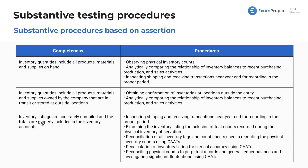Lastly, we are concerned that inventory listings are accurately compiled and totals are properly included in the inventory accounts. We're going to inspect shipping and receiving transactions near year-end for recording in the proper period. We could examine the inventory listing for inclusion of test counts recorded during the physical inventory observation. We could conduct a reconciliation of all inventory tags and count sheets using computer-assisted auditing techniques, recalculate the inventory listing for accuracy, and reconcile the physical counts to perpetual records — for example, if we physically count 15 pieces but records say 14, we see a discrepancy.